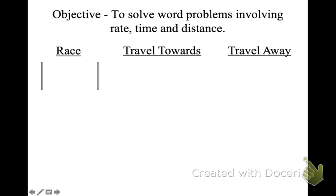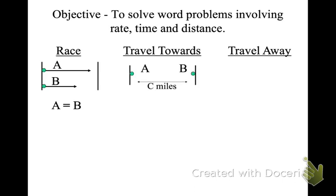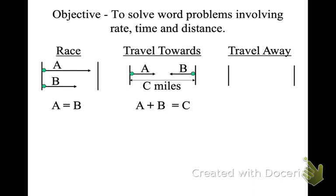There are three types of situations when solving motion problems. The first is where two people are going in the same direction — in that case, whatever distance A goes is equivalent to what distance B goes. The second type is when two vehicles are traveling towards each other: the distance of A plus the distance of B equals the total distance C.